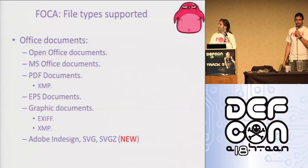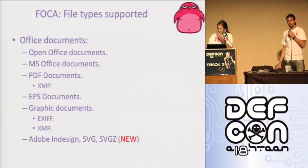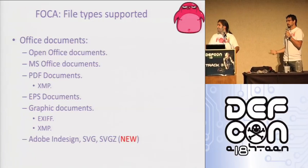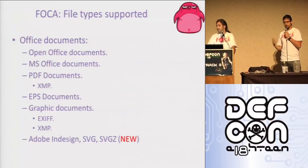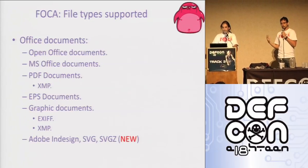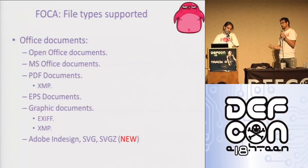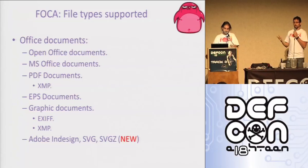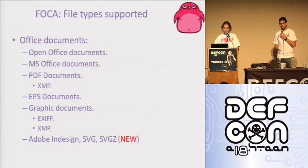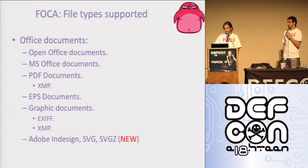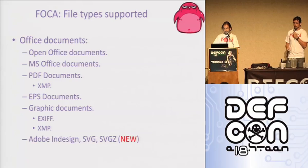What FOCA does is basically analyze a whole bunch of different file types. It's gonna look inside every possible kind of office document, like DOC, PDFs, PPTs, Excel, EPS, images, and so on. We've done more stuff in the second version, but overall it just analyzes all these kinds of documents that have information inside.